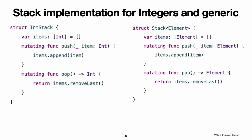Here is a generic version of the same code. Note how the generic version of stack is essentially the same as the non-generic version, but with a type parameter called element instead of an actual type of int. This type parameter is written within a pair of angle brackets, element, immediately after the structure's name. Element defines a placeholder name for a type to be provided later. This future type can be referred to as element anywhere within the structure's definition. In this case, element is used as a placeholder in three places.